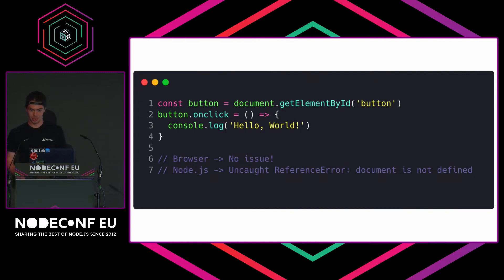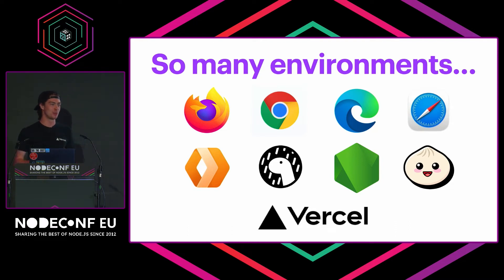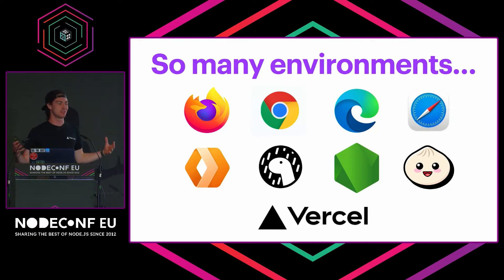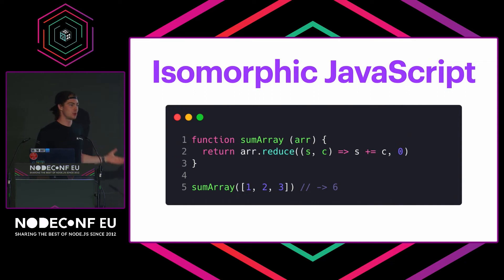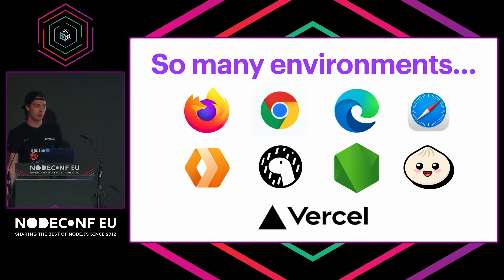In today's modern world, we have a lot of environments to contend with — and this isn't even the full list. When I gave this talk a few months ago, I didn't have the Bun logo, and I kind of forgot about the Safari logo. But we want interoperable JavaScript. If you can run JavaScript on all these platforms and the simple sum-array function works on all of them, what's stopping us from running fetch — adding fetch to all of these different environments?